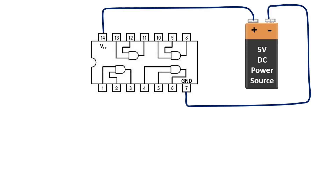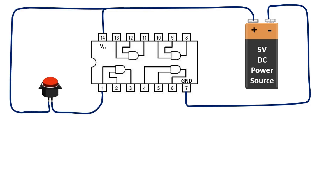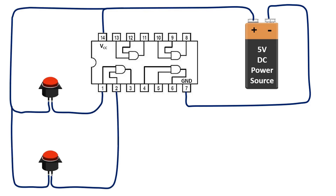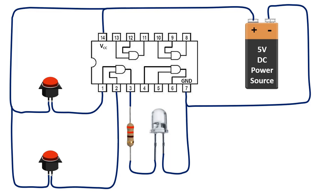First of all, we need to feed the positive and negative of the integrated circuit with a DC power supply. The first and second pins of this IC are the inputs of the AND gate. Let's connect the buttons to give logic 1 to these inputs from our 5 volt DC power supply. The output can be taken from the third pin, and we connected an LED to visualize the output value.